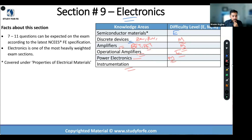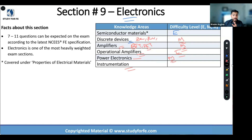Instrumentation mostly revolves around devices — RTDs, the Wheatstone bridge, and transducers. There are some equations, and the last homework problem on this topic seemed easy, but the math became super challenging with the logarithm. Let's call it easy overall.